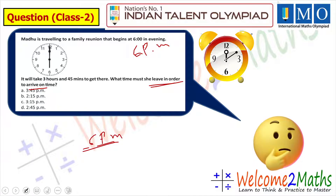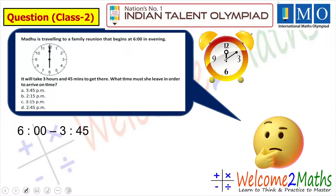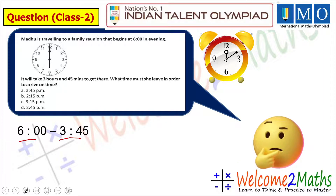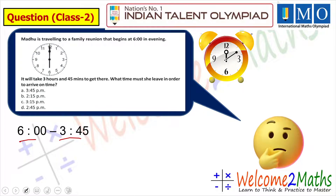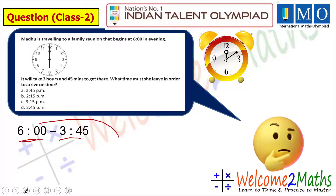To find the answer, we need to figure out 3 hours 45 minutes before 6 pm — that is the time she must leave. So we have to subtract 3 hours 45 minutes from 6 pm. First, I will show you how to solve this mentally, and then I will show the traditional subtraction method.